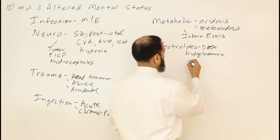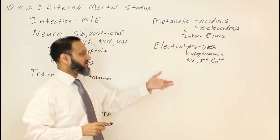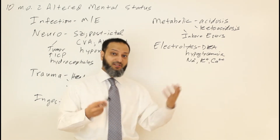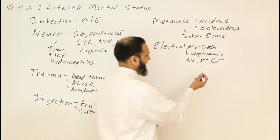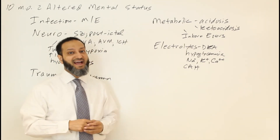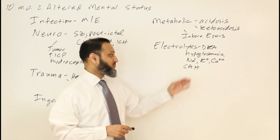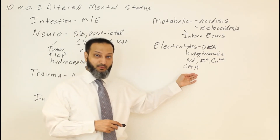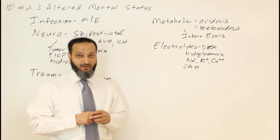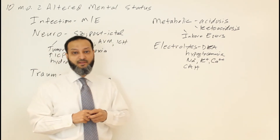Other electrolyte abnormalities — issues with sodium, potassium, or calcium — can cause altered mental status for various reasons: dehydration, inborn errors of metabolism, DKA, and more. When thinking about electrolytes, consider congenital adrenal hyperplasia causing significant electrolyte imbalance — typically with salt wasting, hyperkalemia, acidosis, and hypoglycemia from cortisol deficiency. An adrenal crisis, adrenal insufficiency, or congenital adrenal hyperplasia can all cause altered mental status through these electrolyte abnormalities.